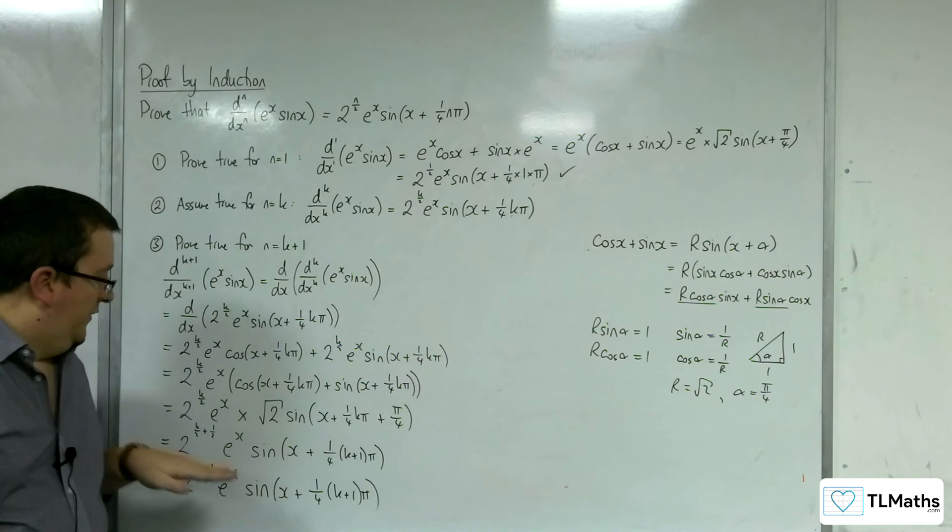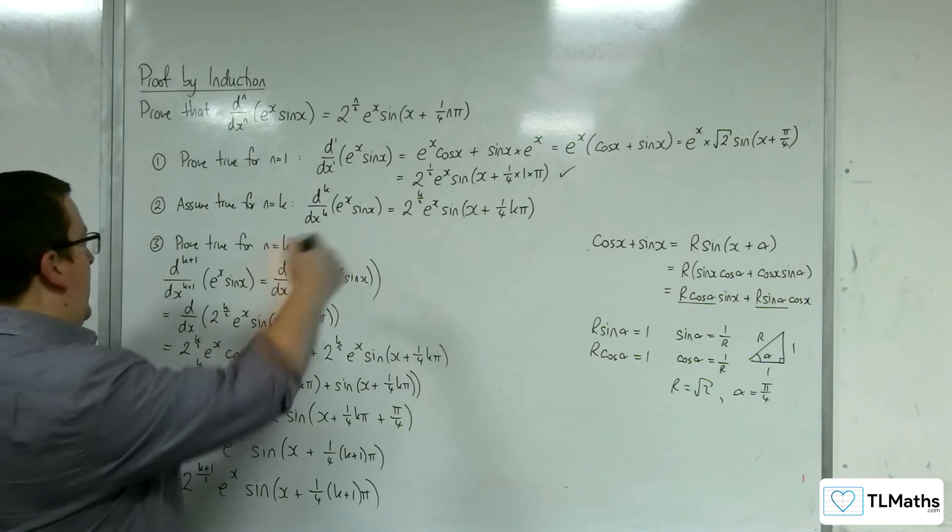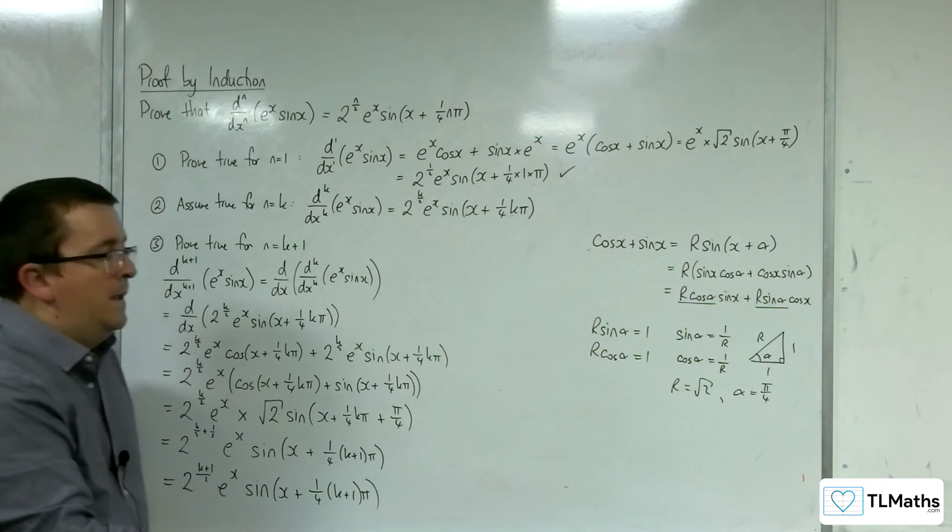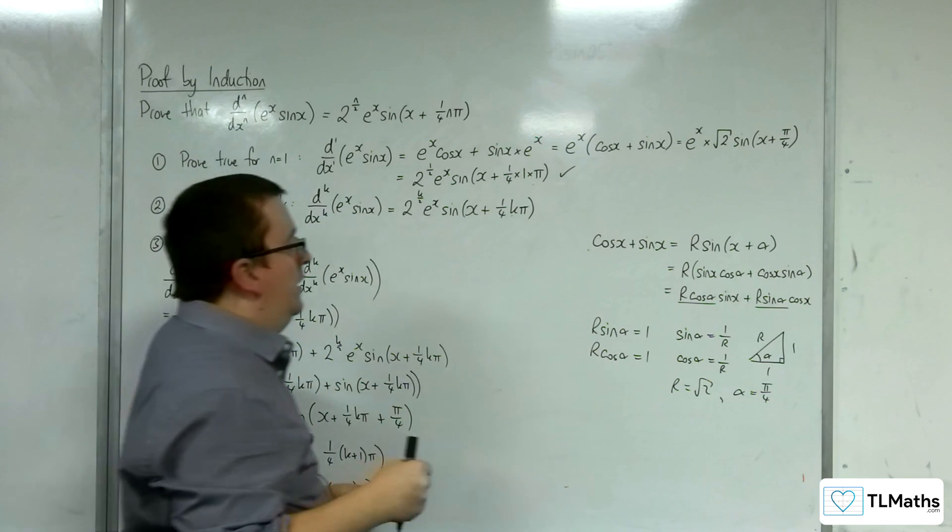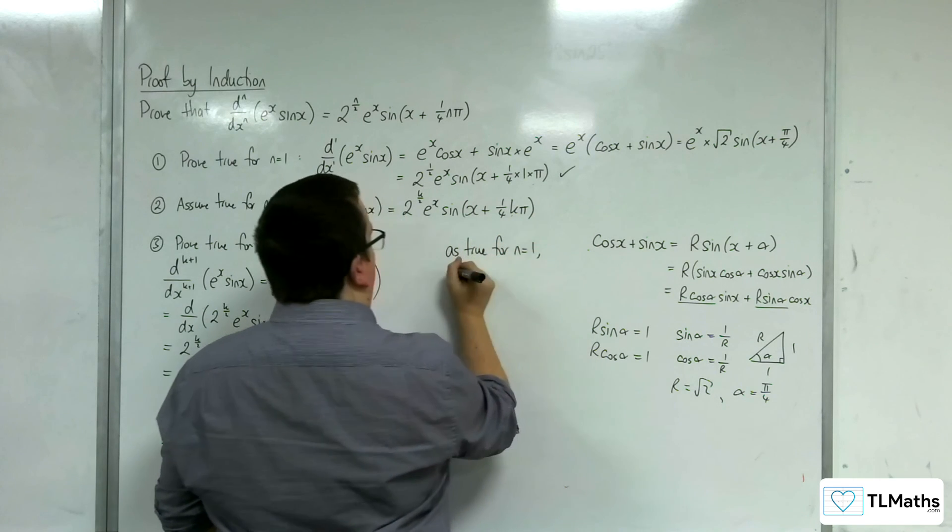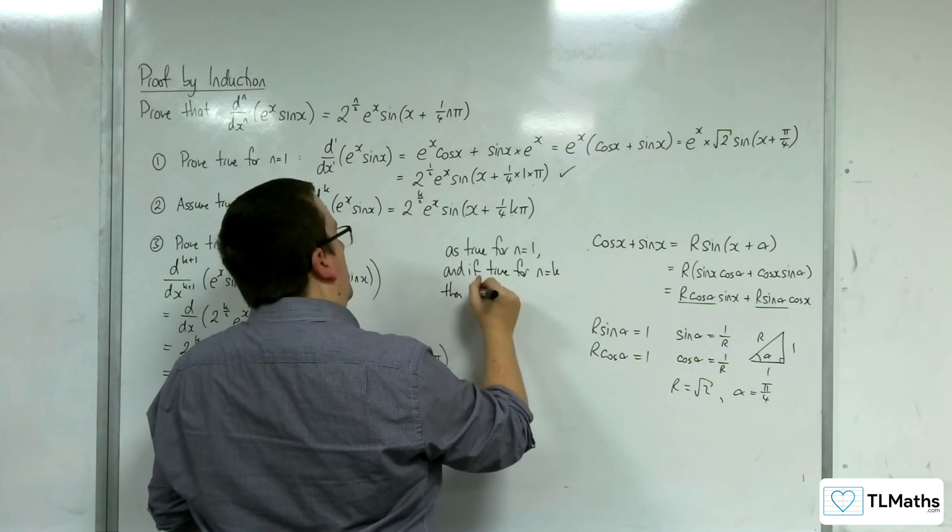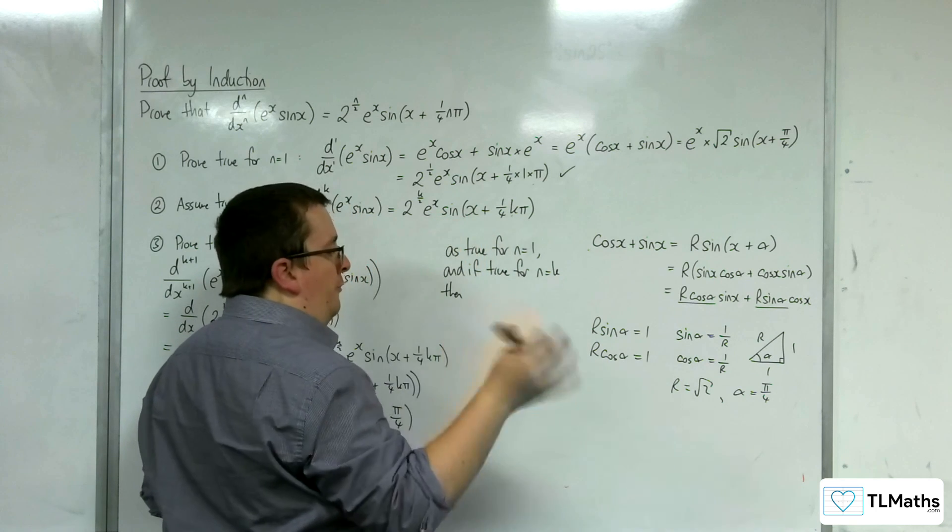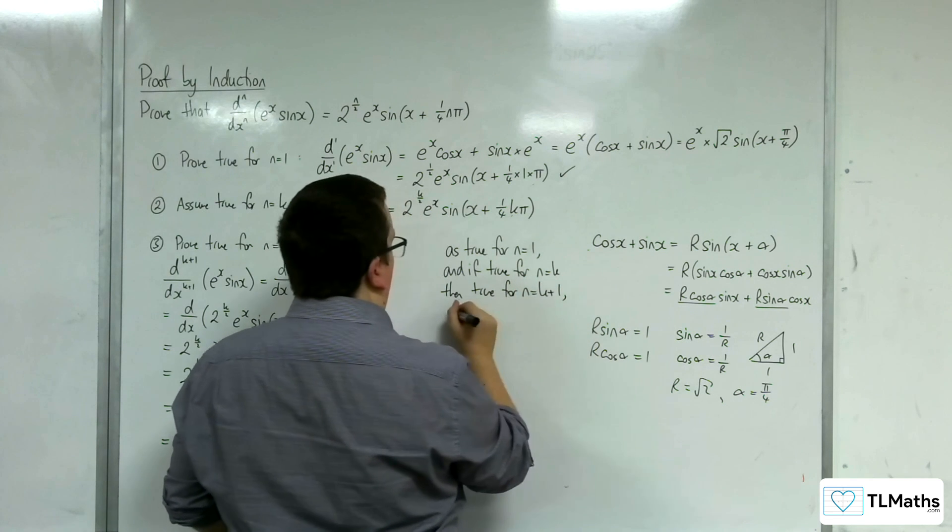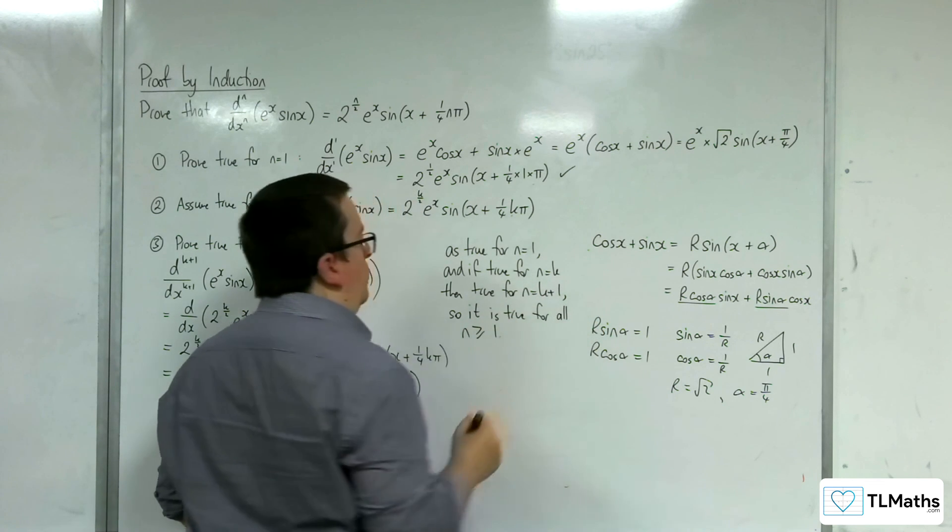And that is exactly what we would expect if we replaced each of the n's in here with k plus 1. And so if it is true for this, then we've shown that it is true for the k plus 1th term. So, we are done, we just need our concluding statement now. As true for n equals 1, and if true for n equals k, then we've shown that it's true for n equals k plus 1. So, it is true for all n greater than or equal to 1.